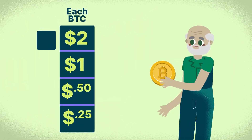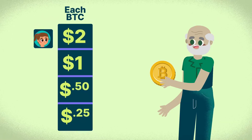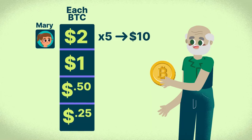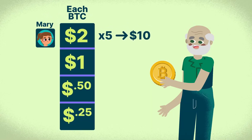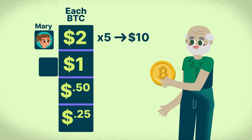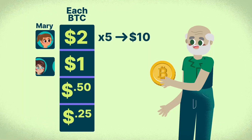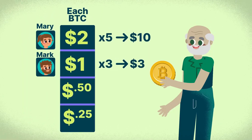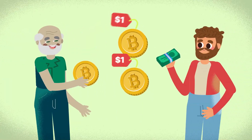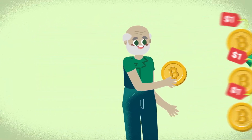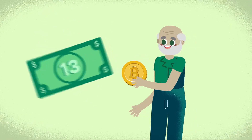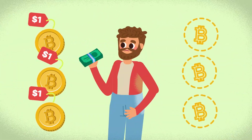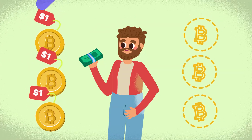The exchange helps Terry find the highest buying price, which is Mary's offer of $10 for 5 BTC. However, Terry still has 3 BTC to sell, so the exchange helps Terry find another buyer — Mark — who offers $1 for each BTC. Terry sells the remaining 3 BTC to Mark, earning a total of $13. Mark acquires 3 BTC for $3, but must wait for someone else to sell him another 3 BTC.